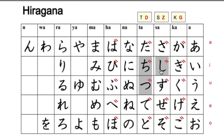Si becomes ji. Chi also becomes ji, so we never use it. And tzu becomes 'dzu' — that's different from su becoming 'zu'. Su went to the zoo — 'zu'. Tzu becomes 'dzu', like a D-Z-U sound.